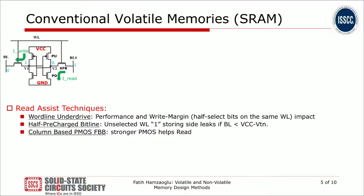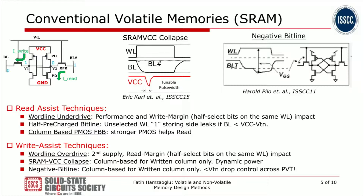Another read assist technique is column-based PMOS forward biasing — a stronger PMOS helps read. For write assist: wordline overdrive is one option but requires a second supply and sacrifices read margin due to half-select bits. SRAM VCC collapse is another commonly used technique to improve write VCC min without hurting read VCC min, applied only to the selected column during write. A third technique is negative bitline — pulling the bitline below VSS makes the pass gate stronger for write on the selected column only, without hurting read.